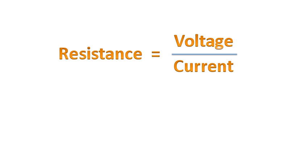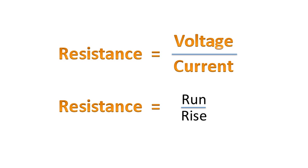Now, resistance is defined as voltage over current. And so today the question is, why is resistance run over rise?